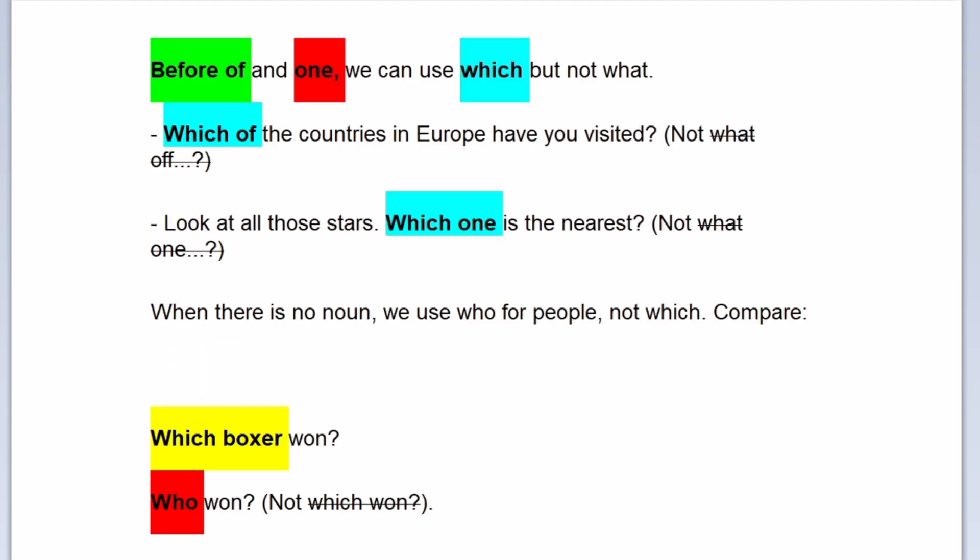Before of and when, we can use which but not what. Which of the countries in Europe have you visited, but not what of? Look at all those stores. Which one is the nearest, but not what one? When there is no noun, we use who for people, not which. Compare which boxer won. Who won, but not which won.